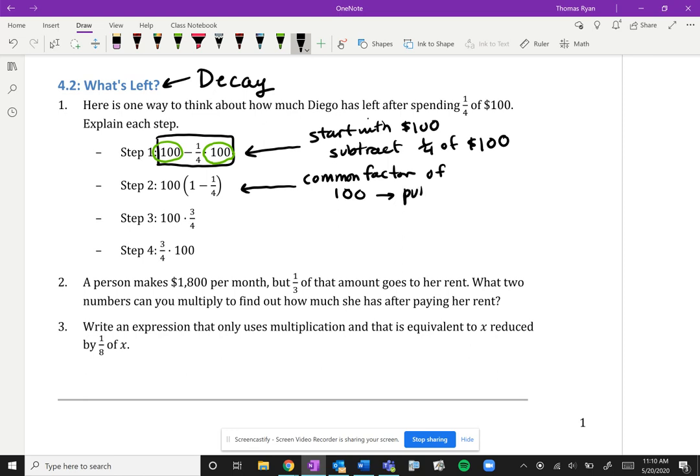We pull that out. So we put the hundred on the outside and then there's one hundred minus a quarter of it. Now step three here looks like what we did is we just simplified one minus one quarter, which gives us three quarters. And then the only difference step four is that we usually put the three quarters in front.